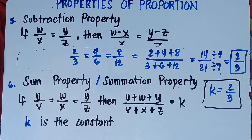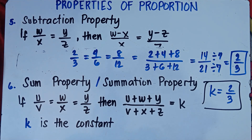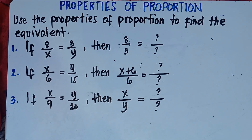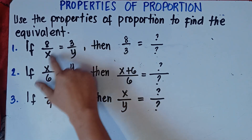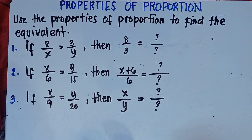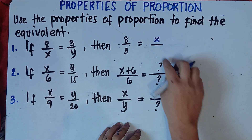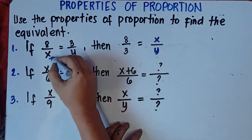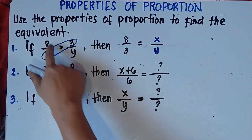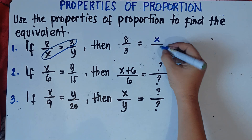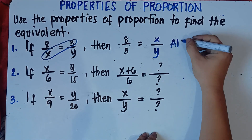Now let's answer practice problems using the properties of proportion. Number 1: if 8 over x equals 3 over y, then 8 over 3 equals blank over blank. You'll notice that 3 becomes the denominator of 8, so the means have been interchanged. We apply the alternation property. Simply interchange the means: this becomes x over y. We just interchange x and y, and copy the extremes 8 and y.